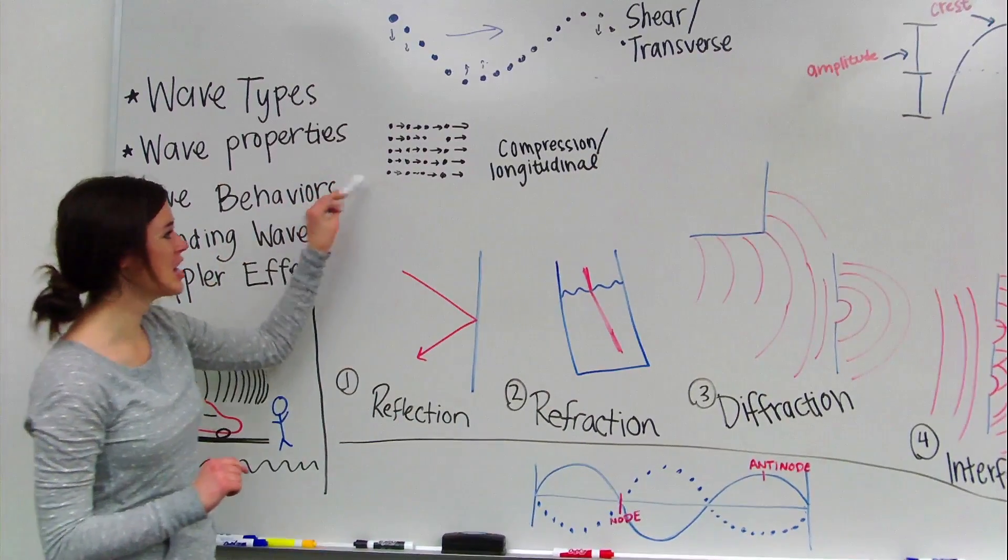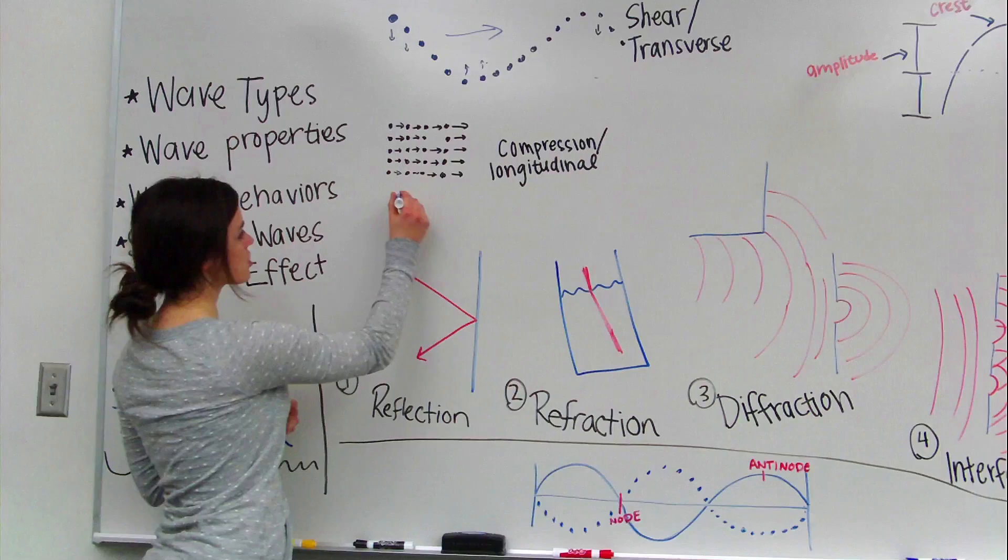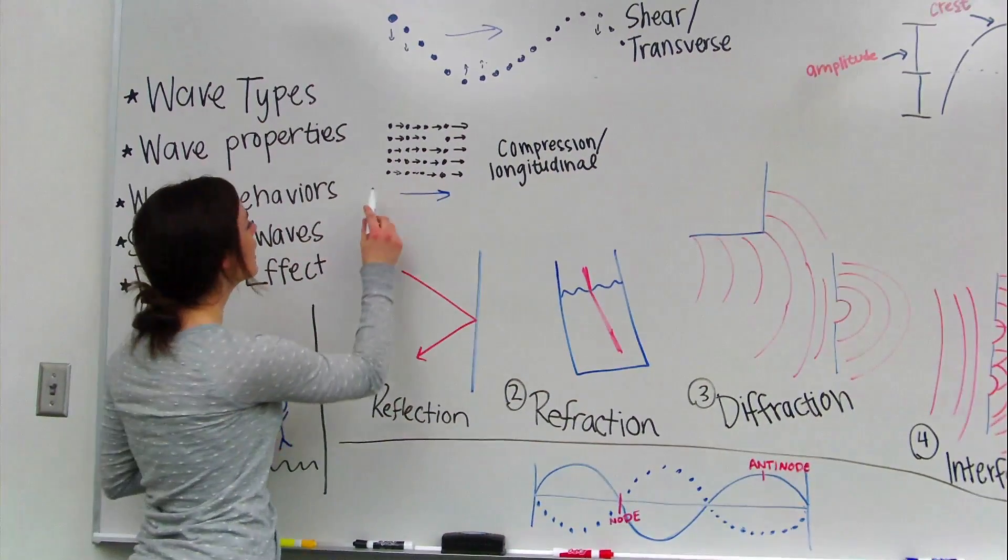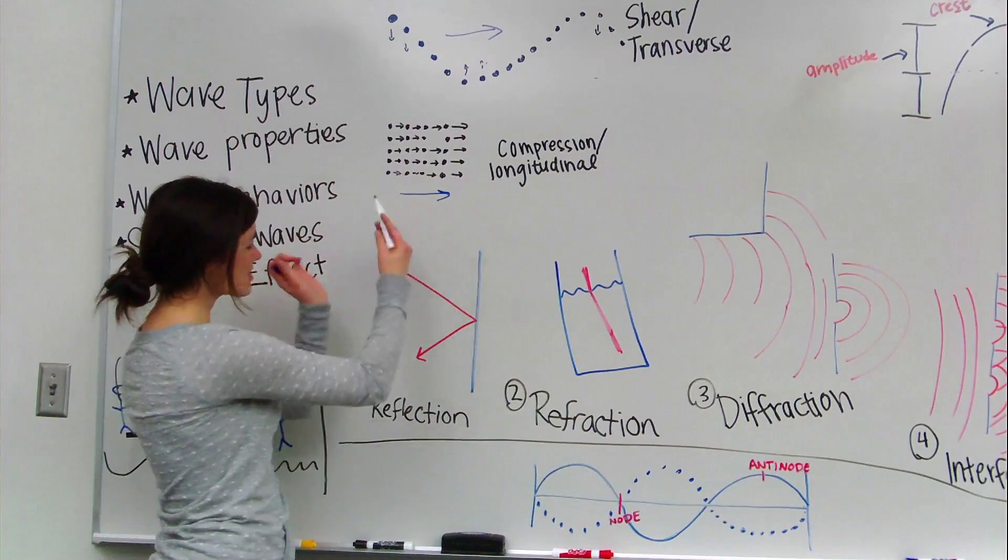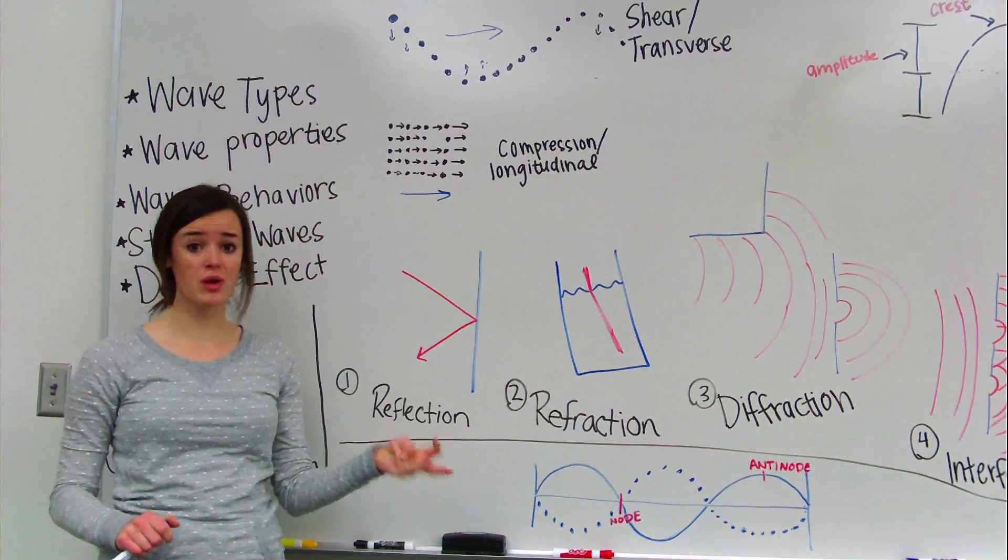Now in contrast to that, we have compression or longitudinal waves. These particles travel in the same direction that the wave propagates. So both are moving to the right here. As it moves, it kind of compresses through space. They can go through solids, liquids, or gases.